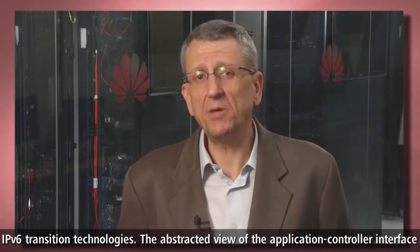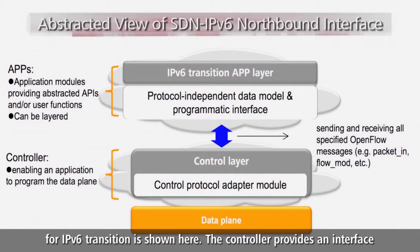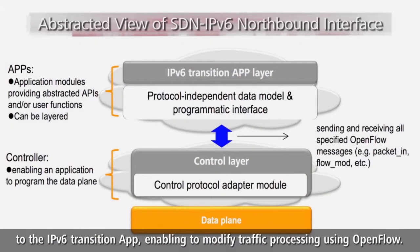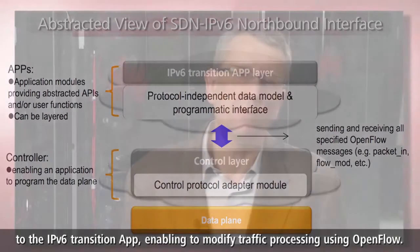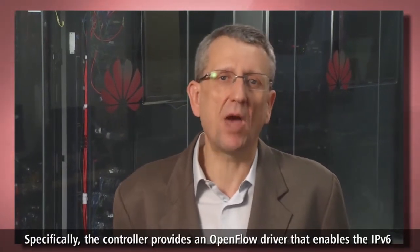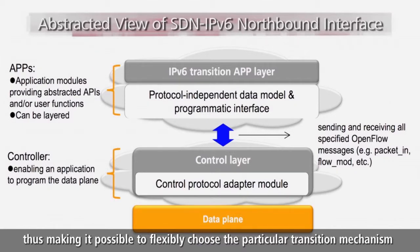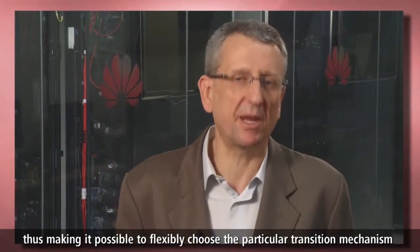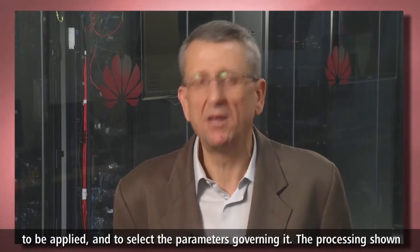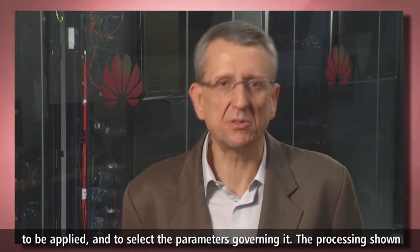The abstracted view of the application controller interface for IPv6 transition is shown here. The controller provides an interface to the IPv6 transition app, enabling modification of traffic processing using OpenFlow. Specifically, the controller provides an OpenFlow driver that enables the IPv6 transition app to instruct all SDN-enabled equipment on how to treat traffic, thus making it possible to flexibly choose the particular transition mechanism to be applied and to select the parameters governing it.